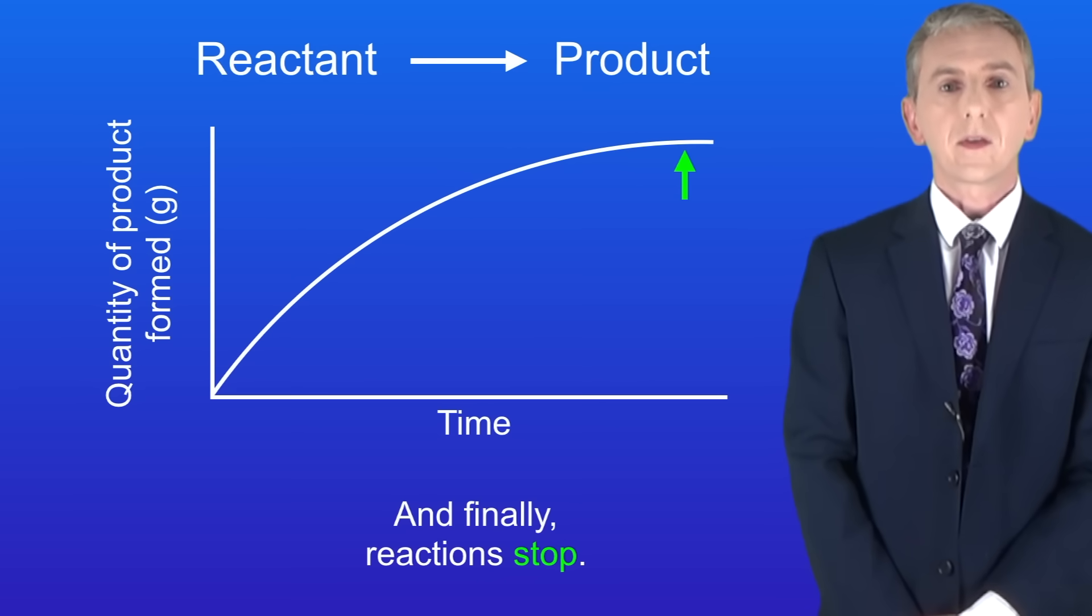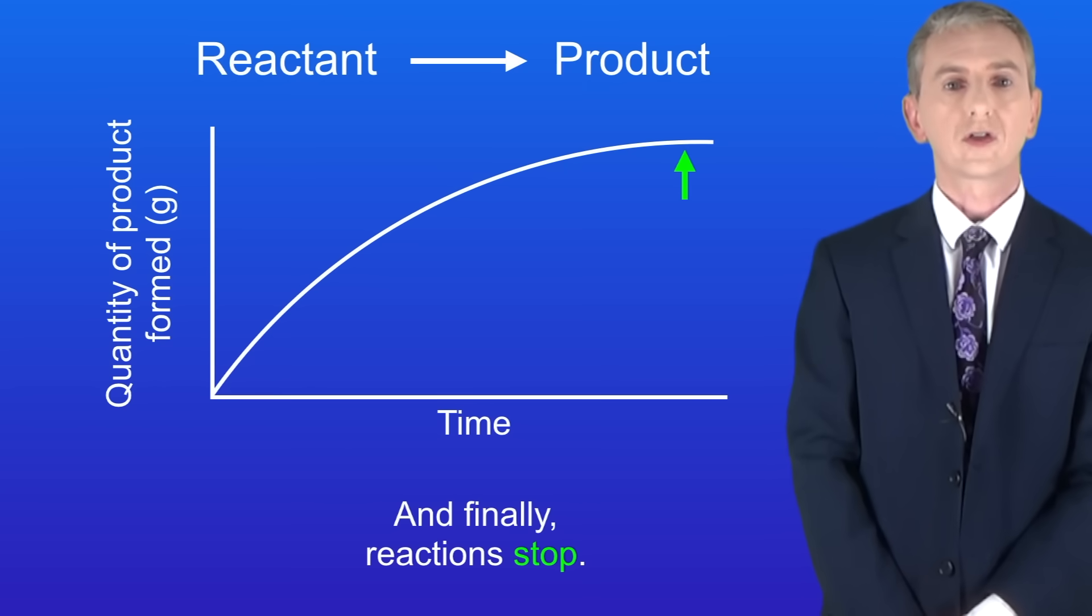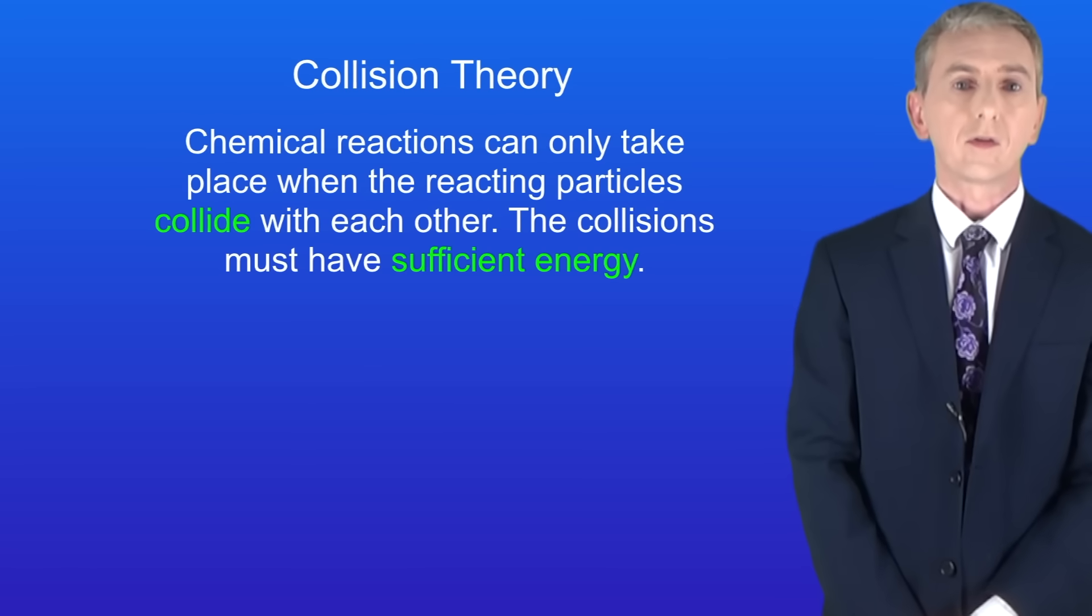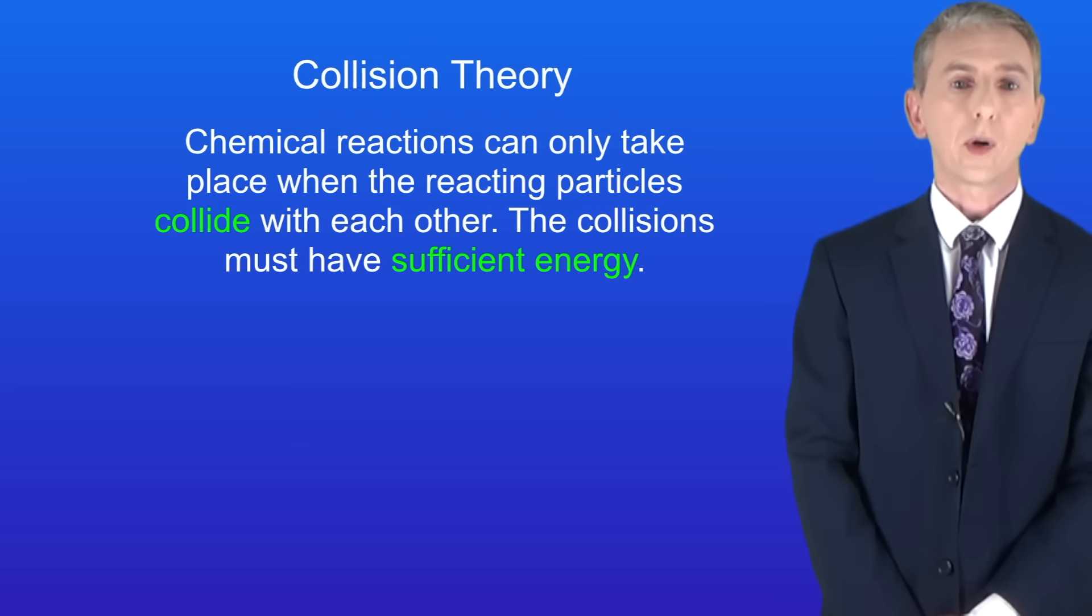Now we can explain the shape of this curve using a key idea in chemistry called collision theory. Collision theory states that chemical reactions can only take place when the reacting particles collide with each other and the collisions must have sufficient energy.